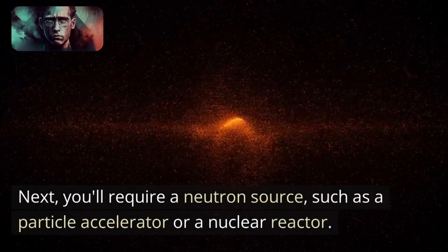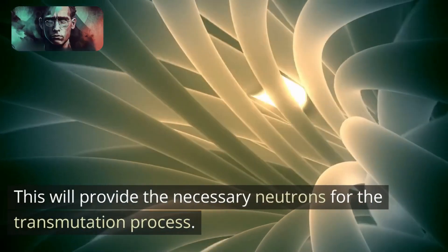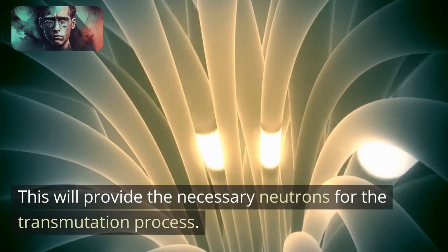Next, you'll require a neutron source, such as a particle accelerator or a nuclear reactor. This will provide the necessary neutrons for the transmutation process.